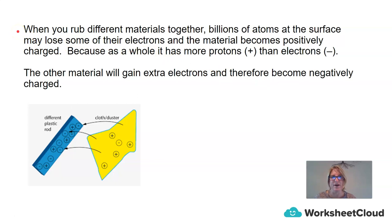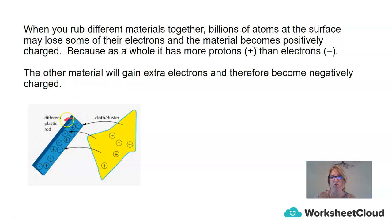When you rub different materials together, billions of atoms at the surface may lose some of their electrons, and the material becomes positively charged, because as a whole it will have more protons — which are positive charges — than electrons, which are negative charges. The other material will gain electrons and therefore become negatively charged. Here we have a plastic rod or ruler and a cloth duster. When we rub the cloth duster on the plastic ruler, some of the electrons leave the cloth duster and are transferred to the plastic ruler. That means the cloth duster has an overall positive charge and the ruler has an overall negative charge.